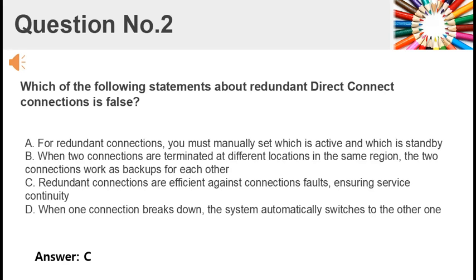Which of the following statements about redundant direct connect connections is false? A. For redundant connections, you must manually set which is active and which is standby. B. When two connections are terminated at different locations in the same region, the two connections work as backups for each other. C. Redundant connections are efficient against connection faults, ensuring service continuity. D. When one connection breaks down, the system automatically switches to the other one. Answer: C.